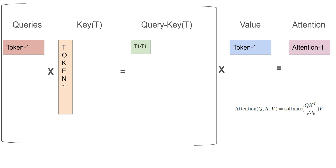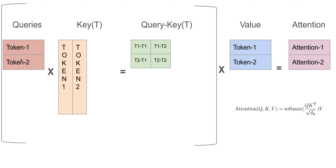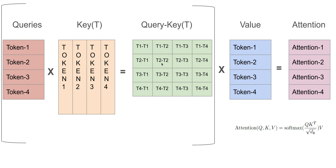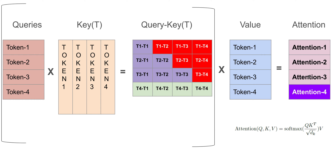Is there a way to make the model do less computation on tokens it has already seen during inference? Yes - the key-value cache. At t=1, the first time the model generates something, that output becomes the input for the next token. Then token 2, token 3, and so on. We are keeping the output the same, so do we actually need to calculate it again and again? No, and that's where key-value caching comes in. These values can be kept in cache.